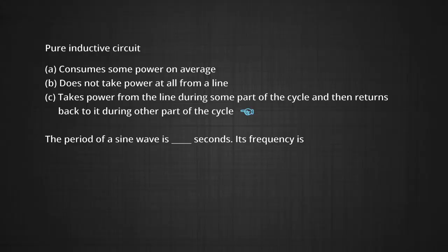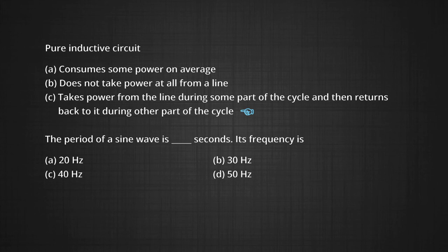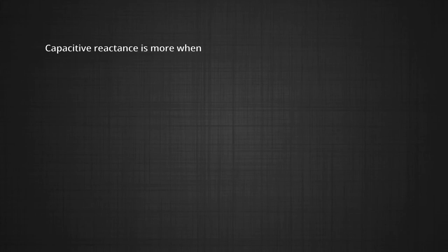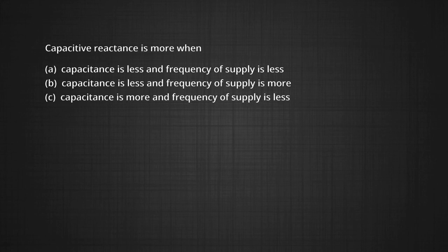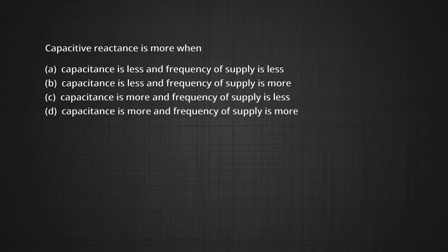Here is a numerical question: what is the frequency of AC supply in India? The options are 20 Hz, 30 Hz, 40 Hz, or 50 Hz. The answer is 50 Hz. One more question: capacitive reactance is more when — capacitance is less and frequency is less; capacitance is less and frequency is more; capacitance is more and frequency is less; or capacitance is more and frequency is more? The answer is capacitance is less and frequency is less — both must be less.